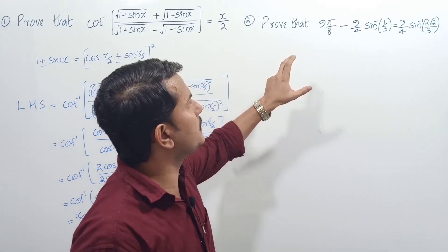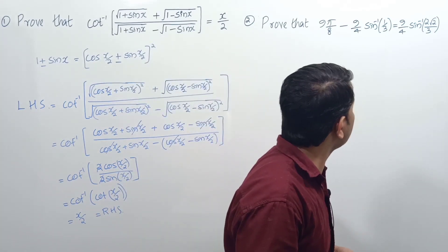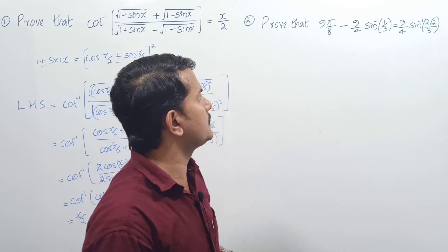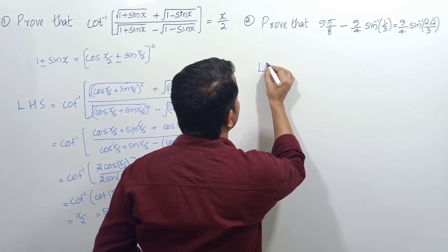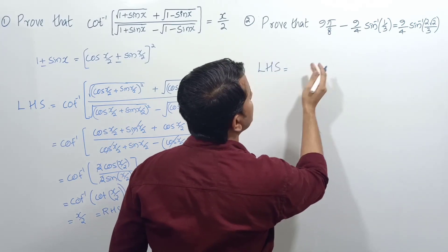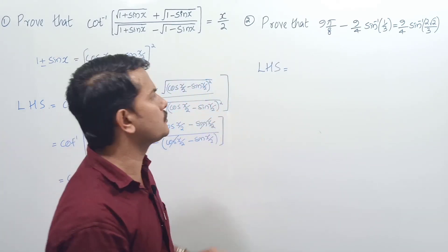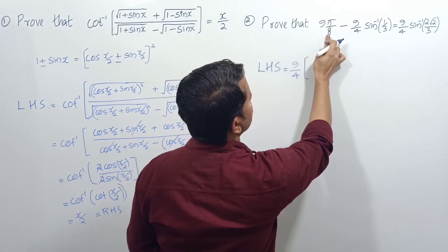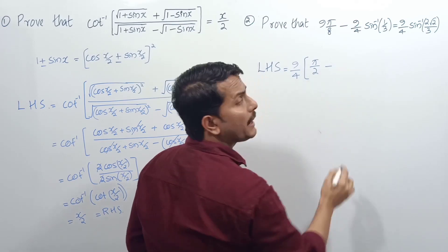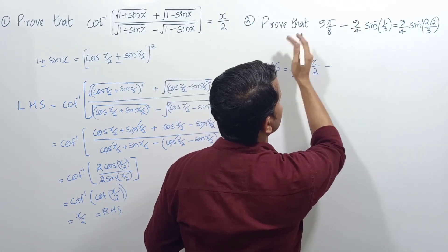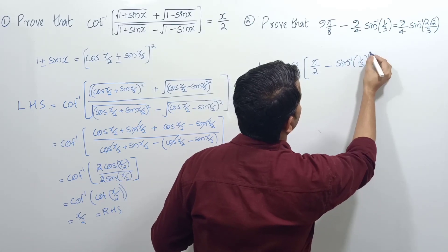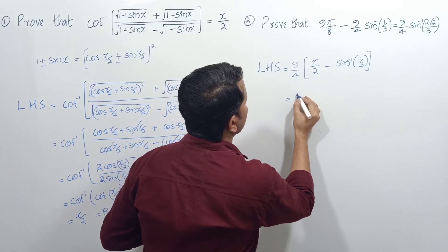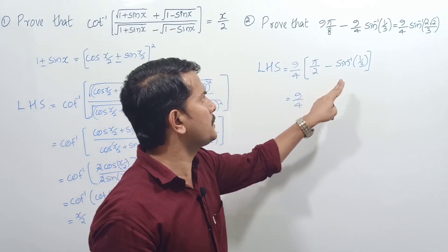Next problem: prove that 9π/8 - (9/4)·sin⁻¹(1/3) = (9/4)·sin⁻¹(2√2/3). Starting from the LHS, 9/4 is common in the first and second terms, so taking 9/4 outside leaves 9/4·(π/2 - sin⁻¹(1/3)).